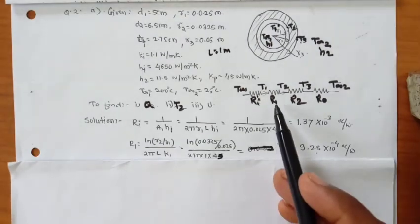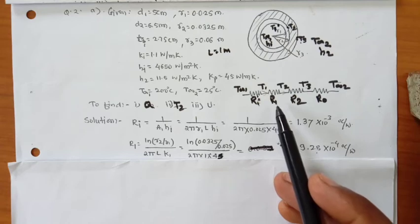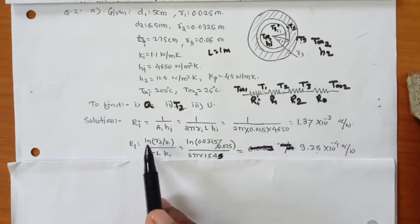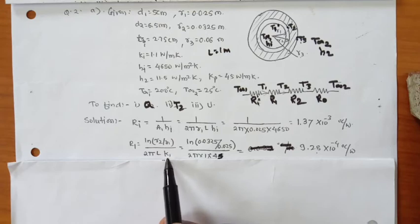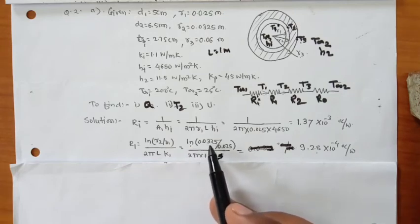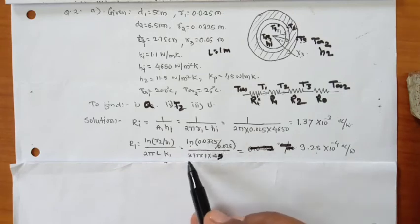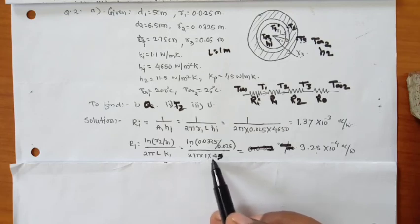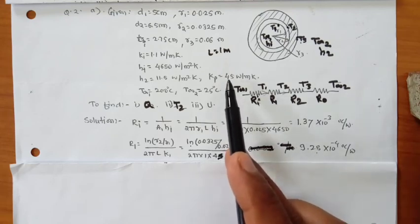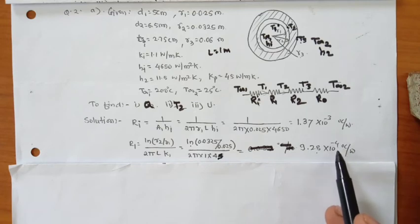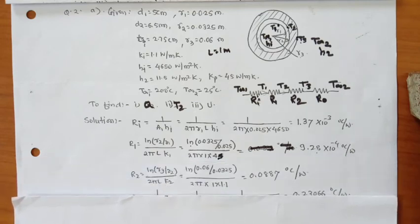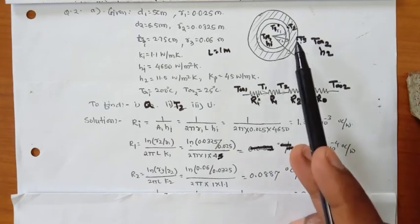The second resistance is conduction through the pipe material: R1 = ln(R2/R1) / (2π × L × Kp) = ln(0.035/0.025) / (2π × 1 × 45). Solving this gives R1 = 9.28 × 10⁻⁴ °C/W.